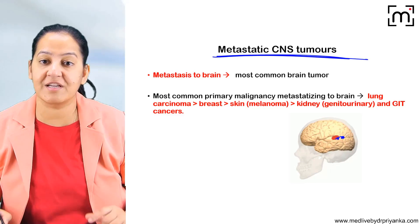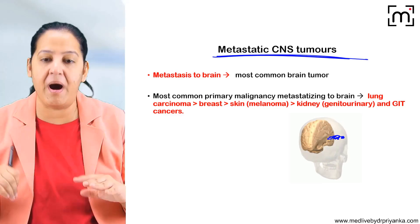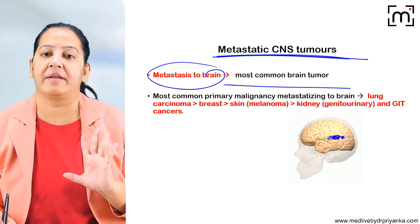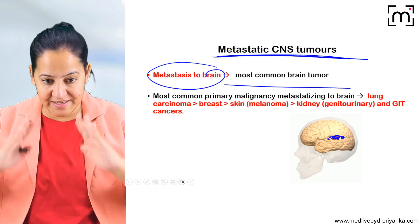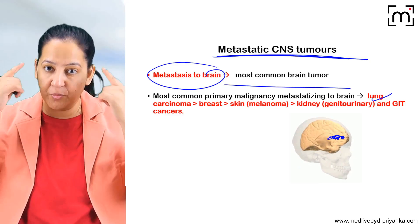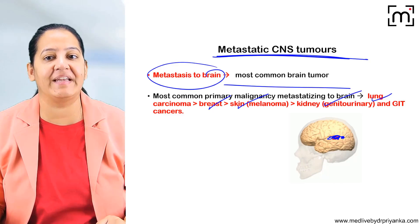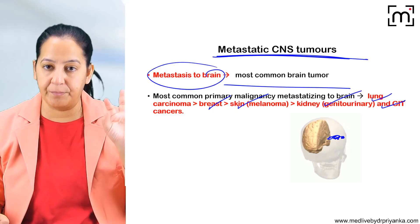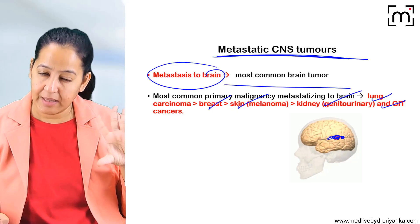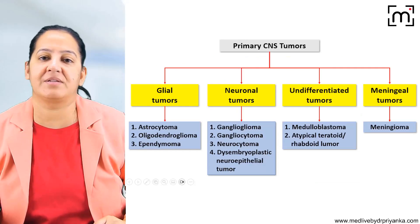Metastatic central nervous system tumours are more common compared to primary tumours. The tumour comes from somewhere else in the body to the brain, making it the most common tumour in the brain. Which tumours most commonly metastasise to the brain? Lung is the most common, followed by breast, followed by skin — the melanoma of the skin — followed by kidney, followed by GIT. You have to learn this sequence: lung, breast, skin, kidney, and GIT. These are the five tumours which commonly send metastases to the brain.